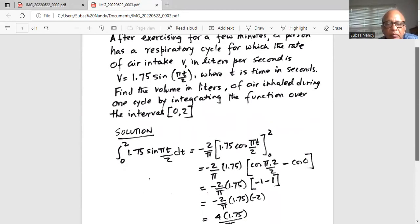So we have minus 2 over pi, 1.75. We can take that outside the parenthesis. Cosine pi, we substitute for t 2 over 2, minus cosine, substitute for t 0, cosine 0.